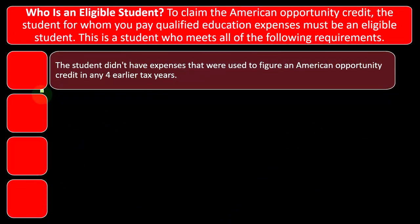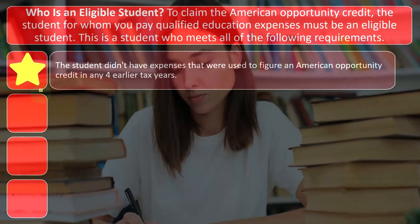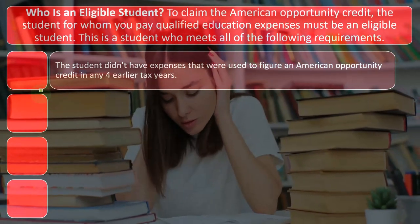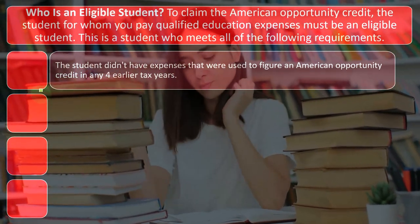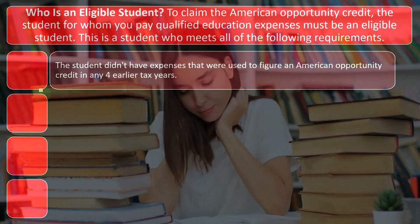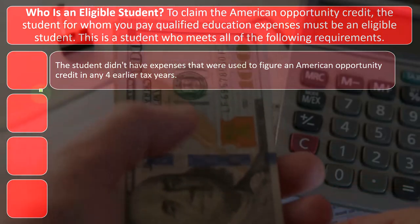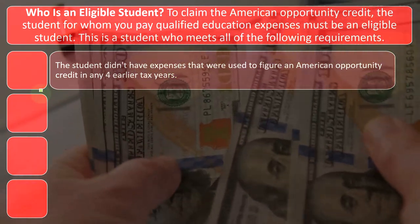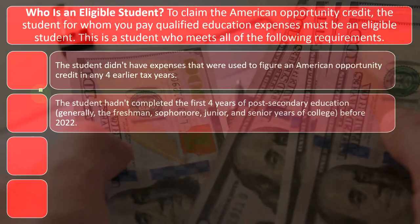Condition one: the student didn't have expenses that were used to figure an American Opportunity Credit in any four earlier tax years. That's for the student, who could be claiming the credit on their parents' return as a dependent, or possibly on their own return if they're not a dependent — some combination of the two within the four-year period. No matter where the credit was claimed, it's tied to that student's expenses, and you only have four years to claim the American Opportunity Credit, after which time you might be able to default to the Lifetime Learning Credit.